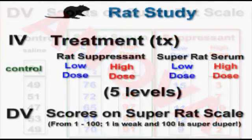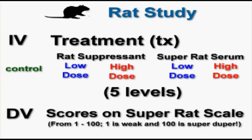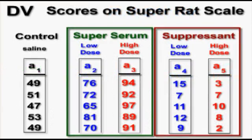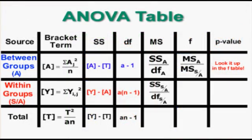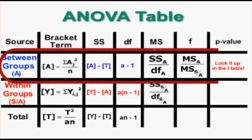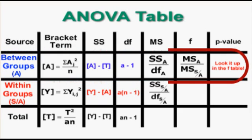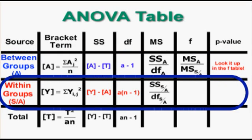If we had multiple DVs, you'd be working with a MANOVA, or multiple analysis of variance. Remember, when analyzing variance, you're always looking for the variance in the DV. To calculate an ANOVA by hand, you'll need to memorize how to work with the source table. Source stands for sources of variance. They can come from between the groups — which is where we want the variance to be if we're trying to show a significant difference — or from within the groups, which is your error.